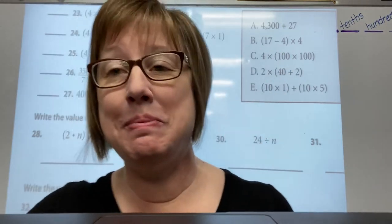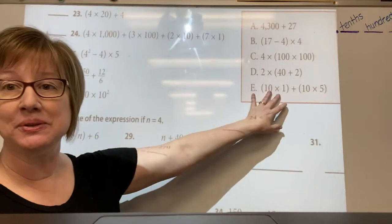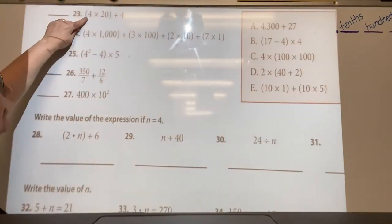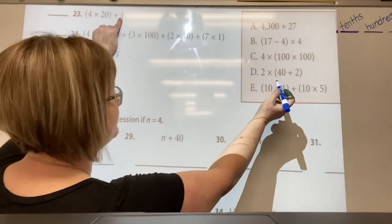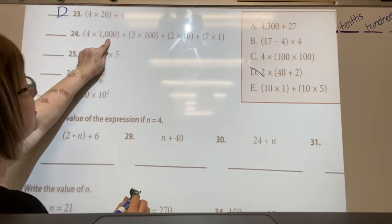Okay, part two, the back of your review page. Here's these that you were supposed to match. Four times twenty plus four is the same as two times forty plus two, so D.